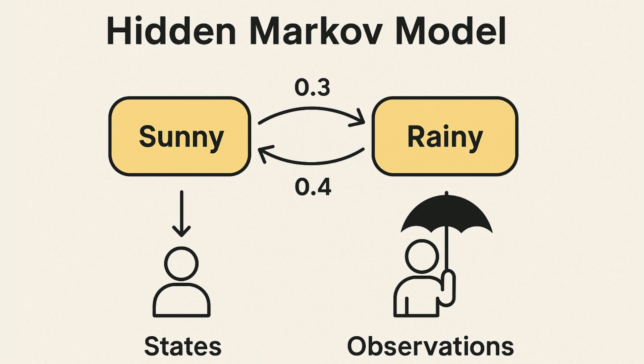If you see someone with an umbrella, you might guess it's raining. If no one has an umbrella, maybe it's sunny. This is the key idea behind a hidden Markov model.